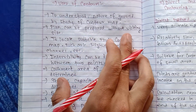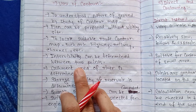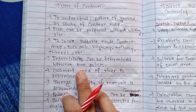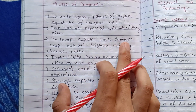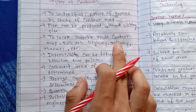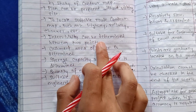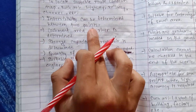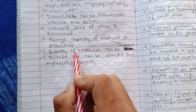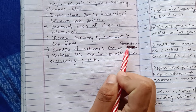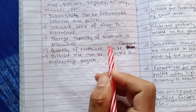Uses of contour maps: a plan can be prepared without visiting the site; a contour map can be easily prepared; suitable routes for roads such as highways, railways, and channels can be located; intervisibility can be determined between two points; catchment area of a river is determined; storage capacity of a reservoir is determined; and the quantity of earthwork can be computed.